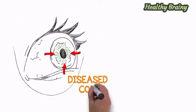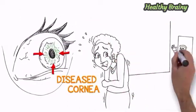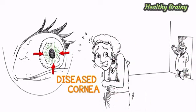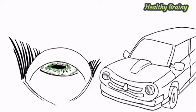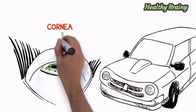So let's get started. The cornea is the clear cover on the front of the eye that has multiple layers, sort of like the windshield of your car.